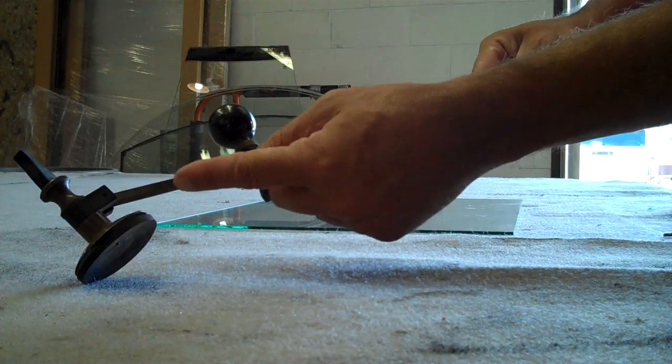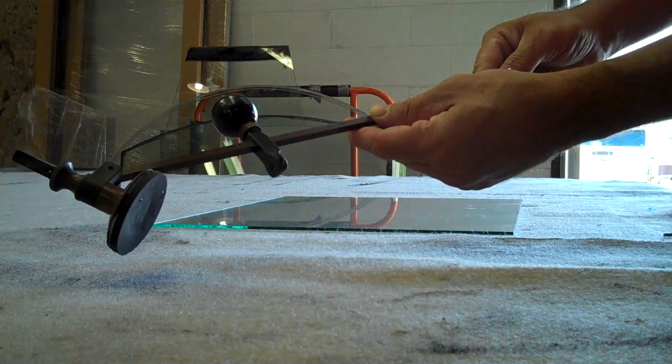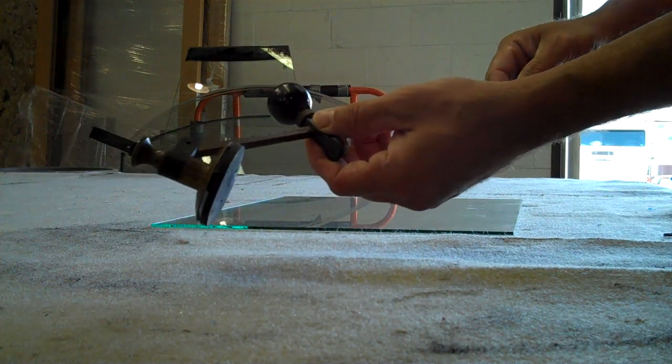And it might be difficult to see, but it has measurements for the diameter of the circle you want to cut. You just move this up and down to the diameter that you're looking for.